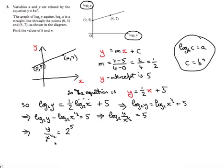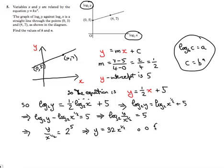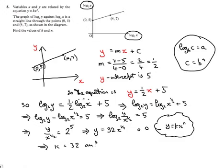Now we're saying: what power do you raise 2 to to get (y over x to the half)? The answer is 5. So y over x to the half equals 2 to the power of 5. Multiplying both sides by x to the half: y equals 2 to the power of 5 times x to the half. Two to the power of 5 is 32, so y equals 32 times x to the half. Comparing with y = k·xⁿ, k equals 32 and n equals one half. That's one method of solving the question.